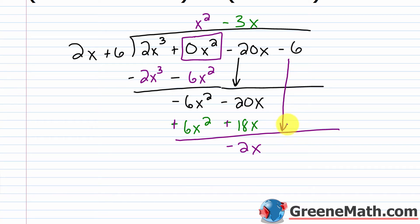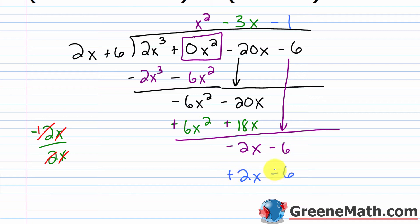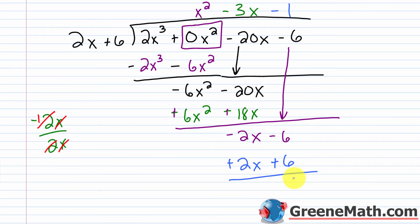I bring down this last term, which is negative 6. My leading term 2x goes into negative 2x: negative 2x over 2x — this cancels and gives negative 1, and x over x is 1. So this is minus 1 up top. Negative 1 times 2x is negative 2x; negative 1 times 6 is minus 6. Subtracting the same thing from itself gives zero. Negative 2x plus 2x is zero; negative 6 plus 6 is zero. So there's no remainder. I get x squared minus 3x minus 1.